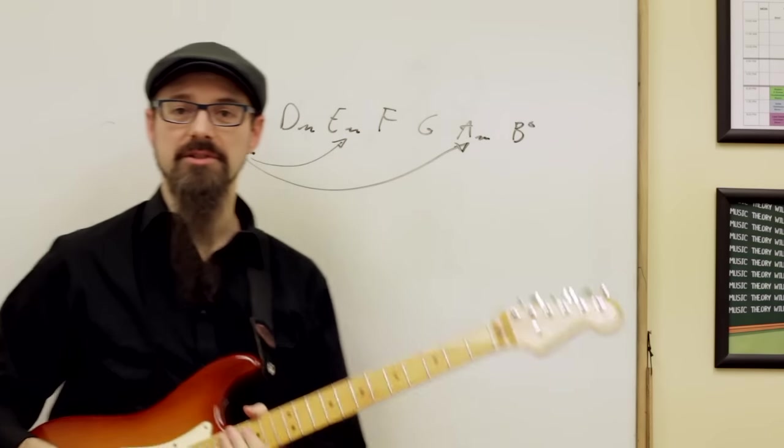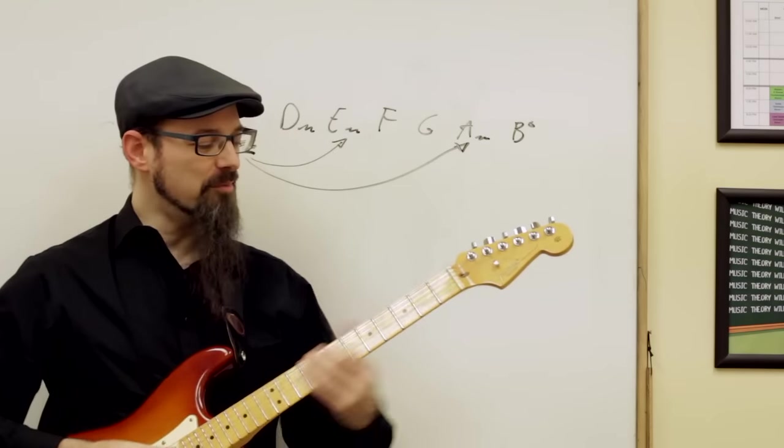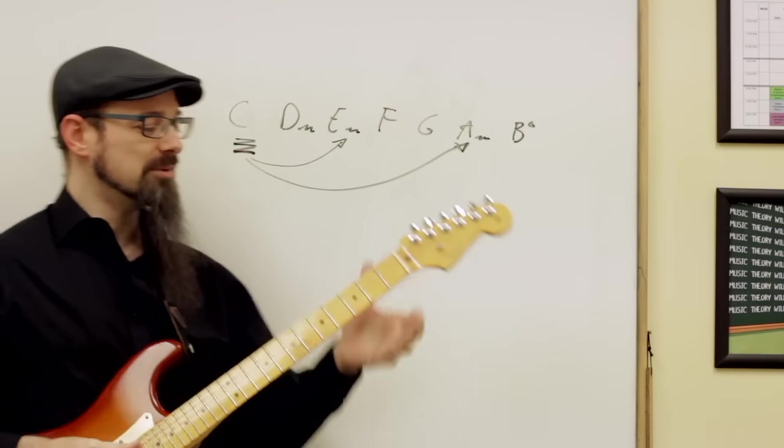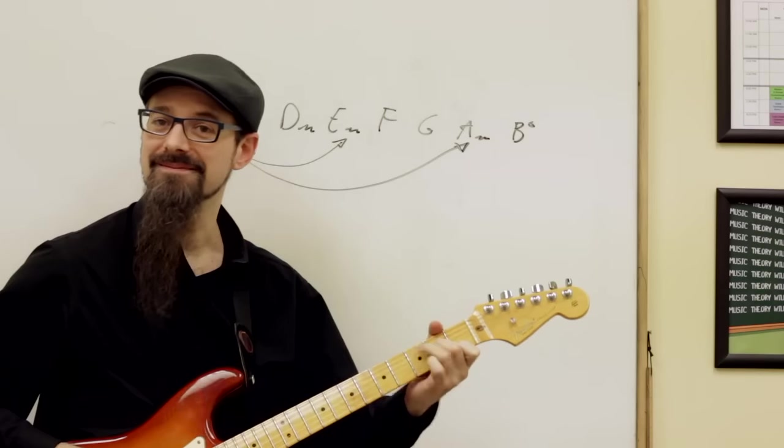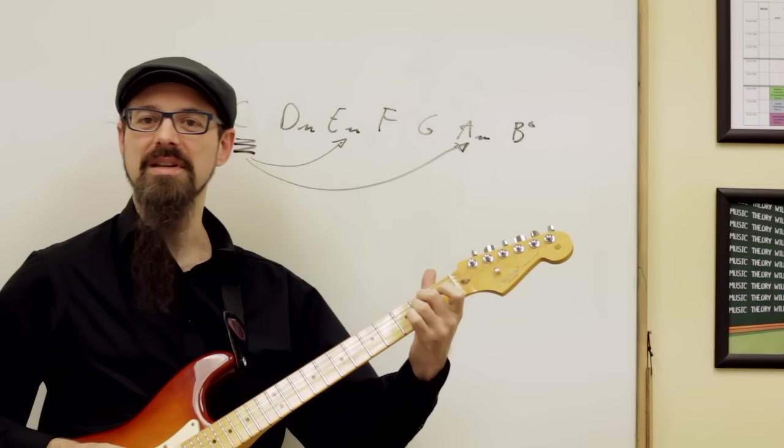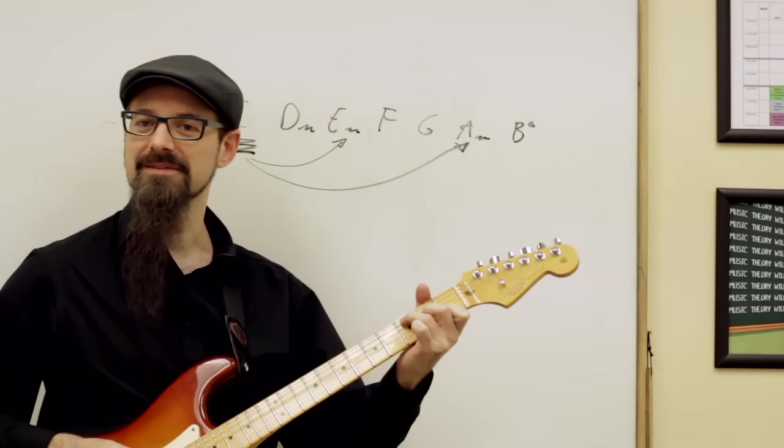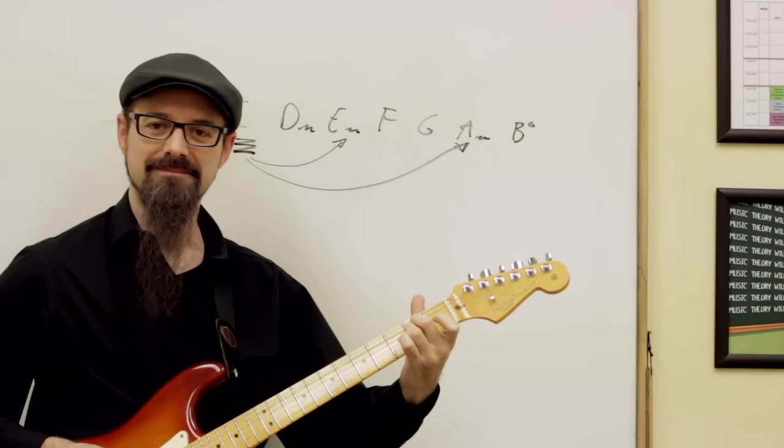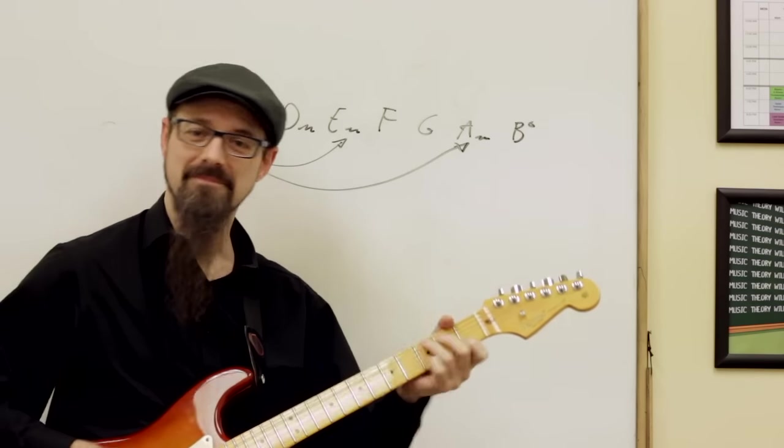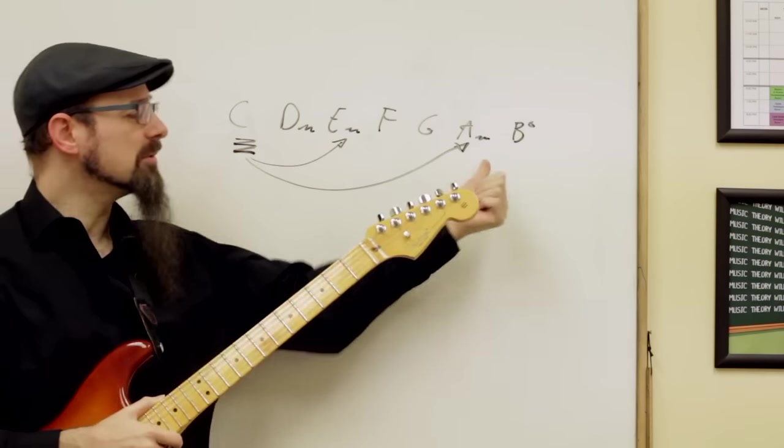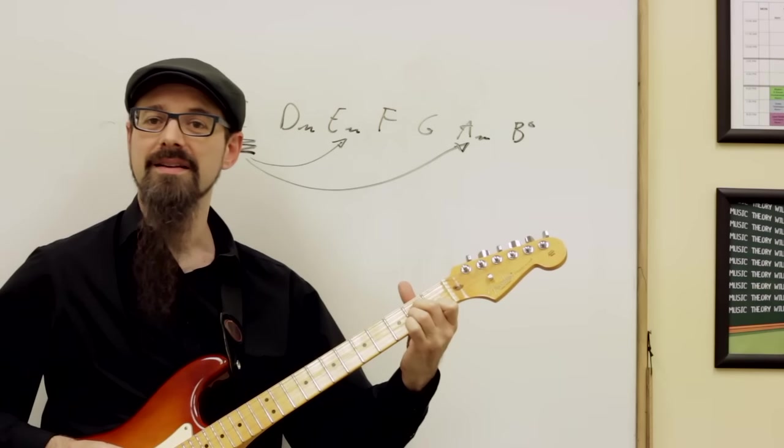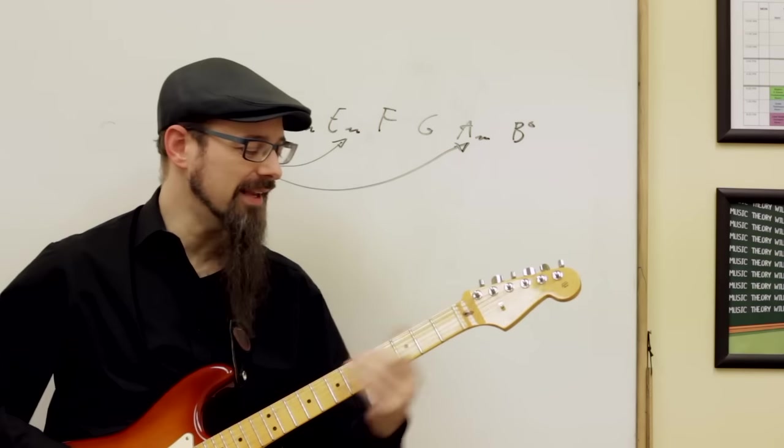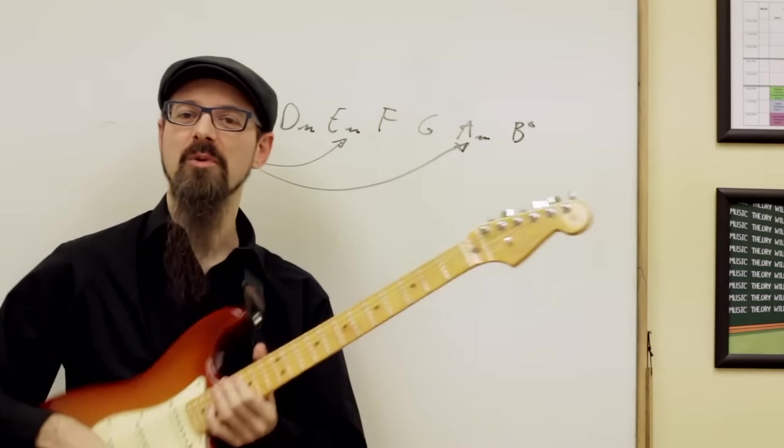And you've heard those chord progressions all the time, especially in pop music. So, C to E minor, or diatonic mediant. You can hear this all the time. And C to A minor, same deal. You've heard this millions of times. It's a very popular move.